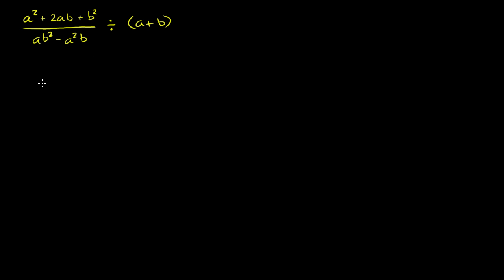The first thing we might want to do is just factor this numerator and this denominator, and then we could divide. Or actually, we could go the other way — we could divide and then factor.